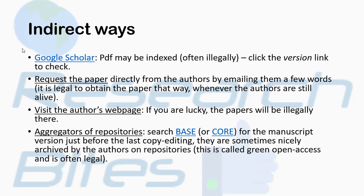First of all, the indirect way is Google Scholar. You can type the name of the article and the author, and there is a possibility that you can get the PDF version of that article from Google Scholar. Second, you can request the paper directly from the authors. You can get the author's information from the starting pages or the abstract given in the journal, and contact them via their email or institution.